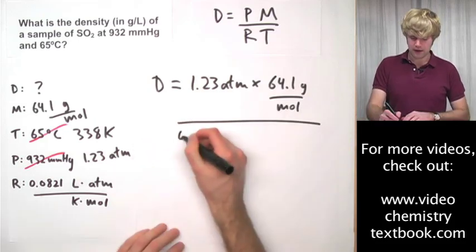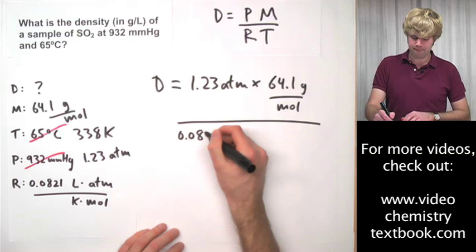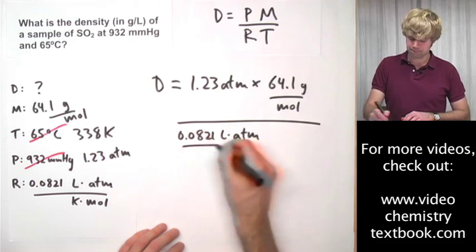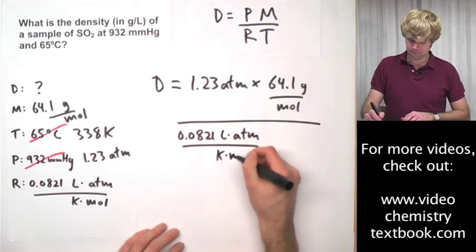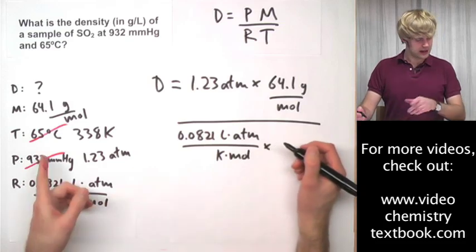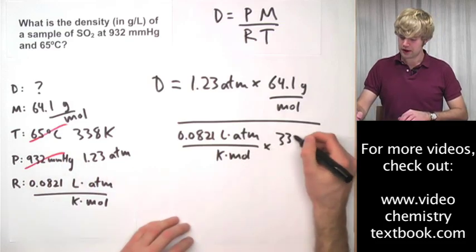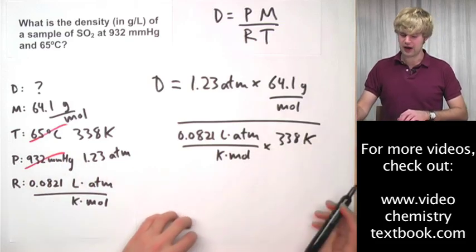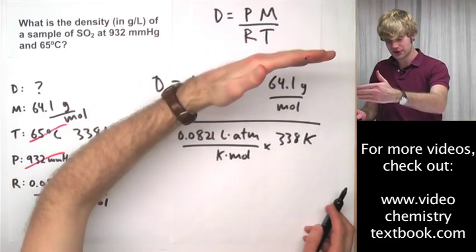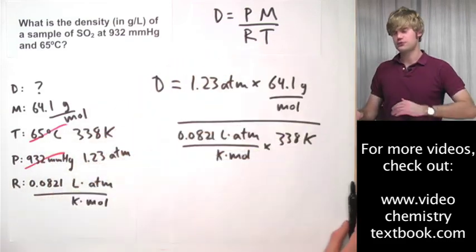Now we have R times T, 338 Kelvin. As you can see, there's four different levels of this fraction.